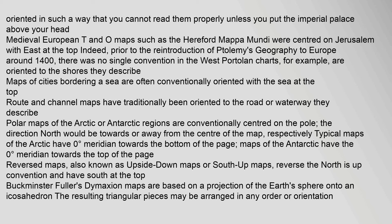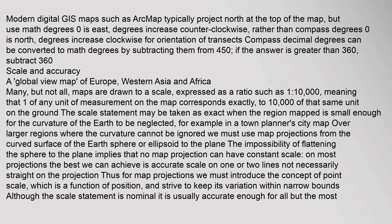Reversed maps, also known as upside-down maps or south-up maps, reverse the north-is-up convention and have south at the top. Buckminster Fuller's Dymaxion maps are based on a projection of the Earth's sphere onto an icosahedron; the resulting triangular pieces may be arranged in any order or orientation. Modern digital GIS maps such as ArcMap typically project north at the top of the map, but use math degrees zero as east, with degrees increasing counter-clockwise, rather than compass degrees zero as north. Compass decimal degrees can be converted to math degrees by subtracting them from 450; if the answer is greater than 360, subtract 360.